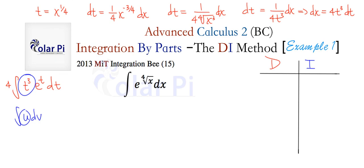So here I'm saying U, which is the part we differentiate, should be T cubed. And so the D is the part we differentiate, or our U, and then the I is the part that we integrate, or our DV. That's the DI mnemonic. All right, all right, all right. So let's get on with it.